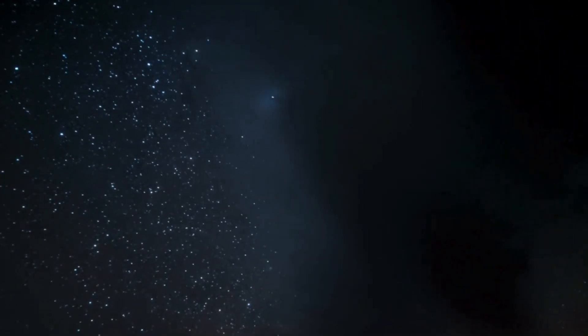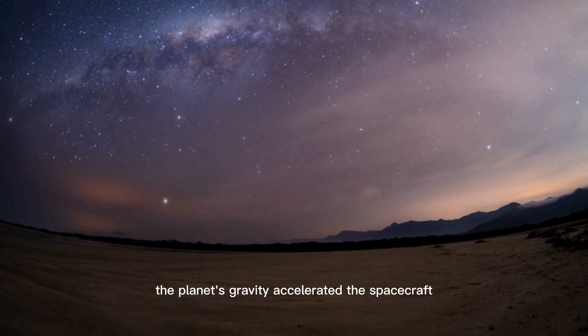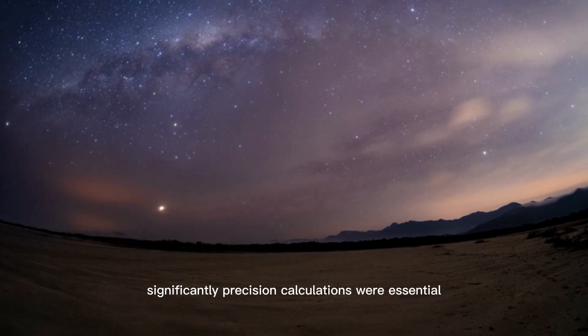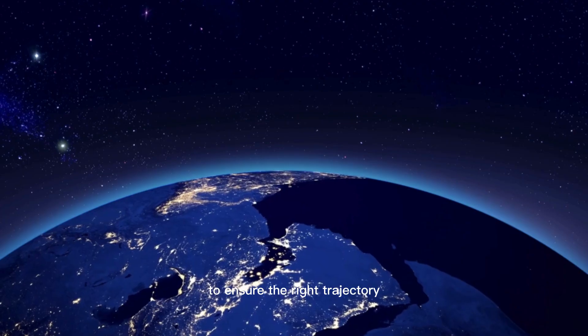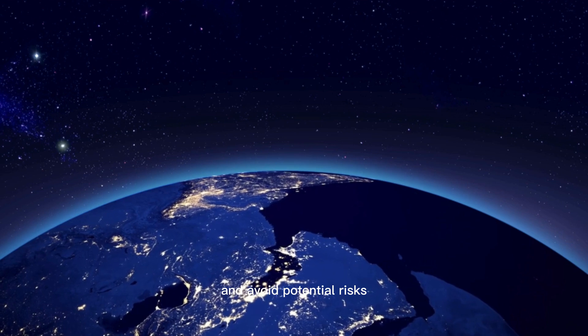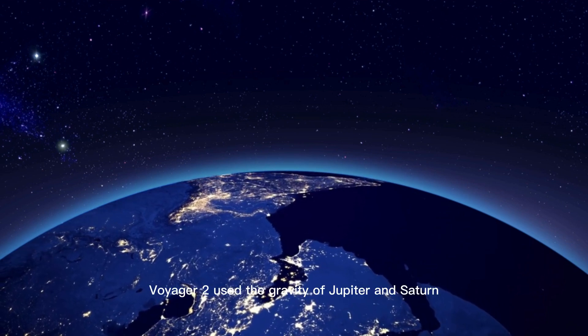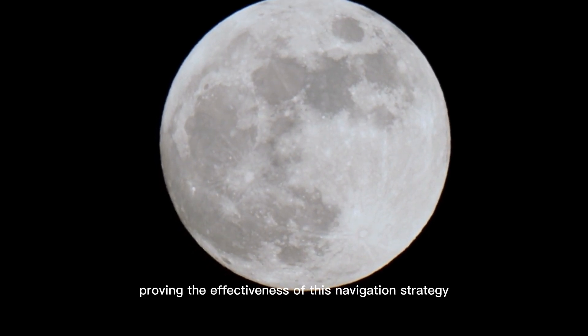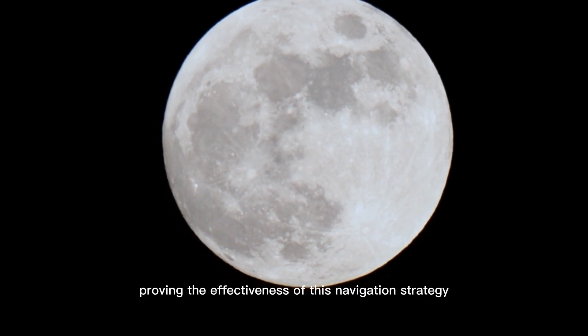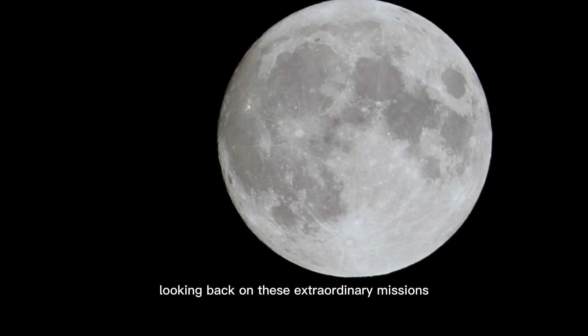For example, as Voyager 1 approached Jupiter, the planet's gravity accelerated the spacecraft significantly. Precision calculations were essential to ensure the right trajectory and avoid potential risks. Similarly, Voyager 2 used the gravity of Jupiter and Saturn to reach Uranus and Neptune, proving the effectiveness of this navigation strategy.